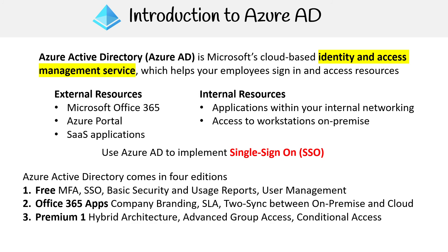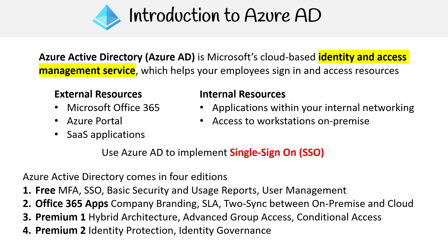Then there are the premium tiers, which really come into play for enterprise or on-premise hybrid architectures. These include advanced group access, conditional access, and — for Premium P2 — identity protection and identity governance. The one thing I don't like about Azure AD is that you can't create custom access controls unless you have Premium P1 or Premium P2, but that's just how they do it.